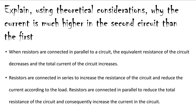We are asked to explain using theoretical considerations why the current is much higher in the second circuit than in the first. The second circuit is a parallel connection. When resistors are connected in parallel, the equivalent resistance of the circuit decreases, so the total current of the circuit would increase. Resistors connected in series increase the resistance of the circuit and reduce the current. If resistors are connected in parallel, they reduce the total resistance of the circuit, which consequently increases the current. Remember that the same current flows through a series connection at different potential differences, while in a parallel connection they share the same potential but carry different currents.